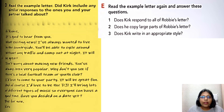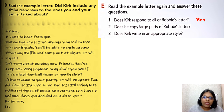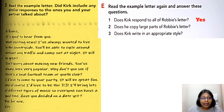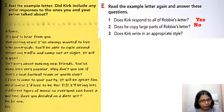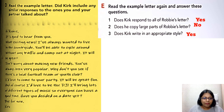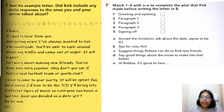Let's answer the comprehension questions about Kirk's letter. Number one: Does Kirk respond to all of Robbie's points? Yes, he did. Number two: Does he copy large parts of Robbie's letter? No — he replied differently without copying. Number three: Does Kirk write in an appropriate style? Yes, he wrote it very well following the proper order.